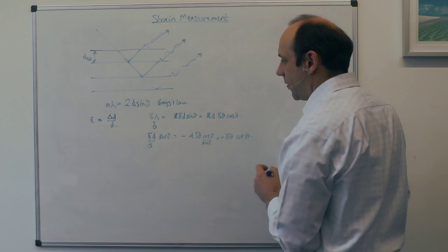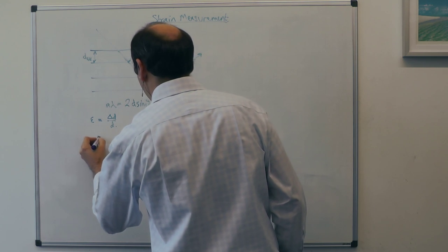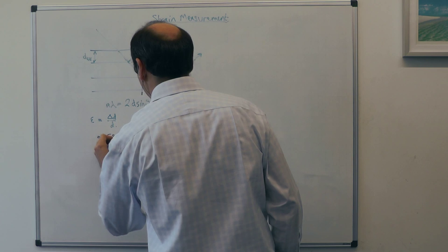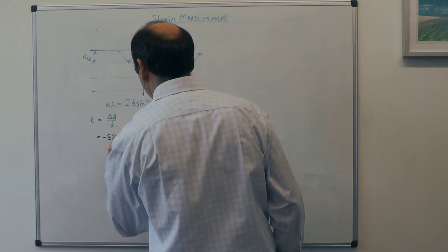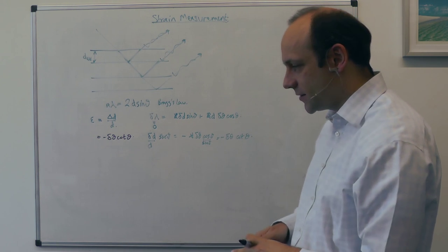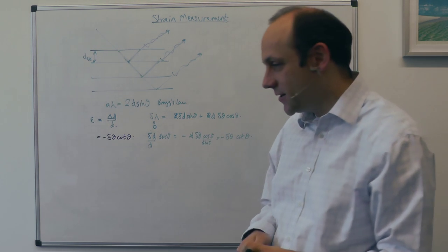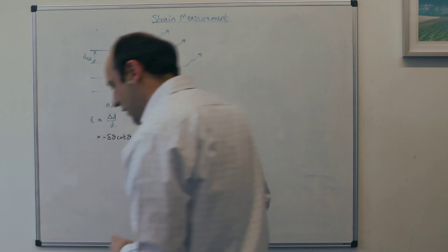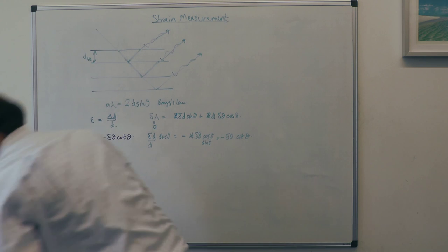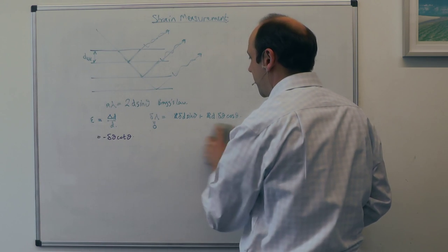So, what we have here is that our strain is minus partial θ times the cotangent of θ. Okay, very nice. And we've just done that by differentiating. Very cool. Now, how does this work on an actual instrument?